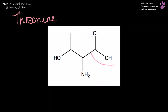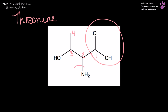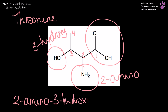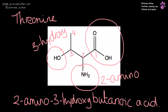Threonine. Here is our carboxylic acid group: one, two, three, four — 2-amino, 3-hydroxy, four carbons — 2-amino-3-hydroxybutanoic acid.